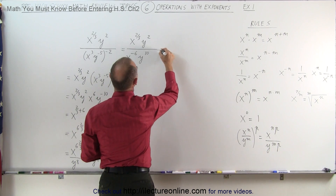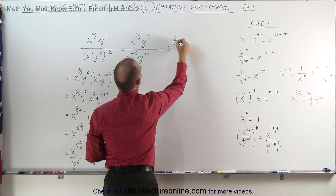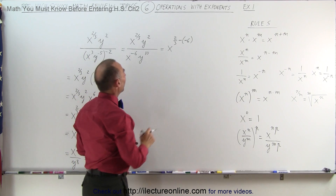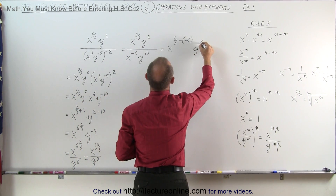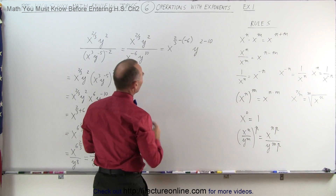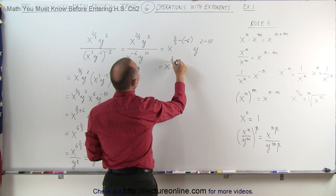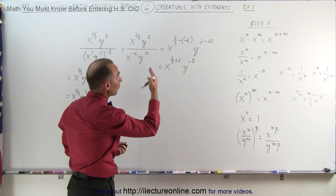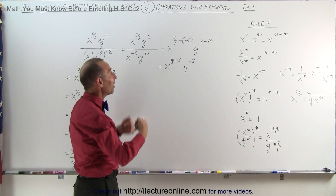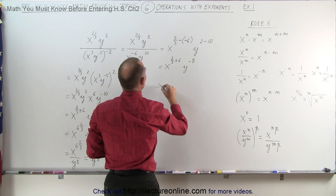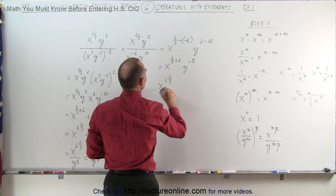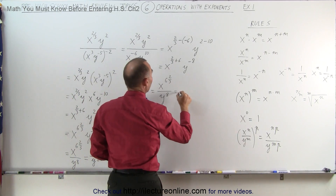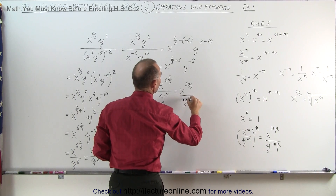So this can be simplified as follows: x to the two-thirds minus a negative 6 — I'm subtracting the exponent from below — and y raised to the 2 minus 10 power. Simplifying, this is equal to x to the two-thirds plus 6 power, and y to the minus 8 power. I can move y to the minus 8 to the denominator to turn that into a positive exponent. Combining these, this becomes x to the 6 and two-thirds power divided by y to the 8 power, which again could be written as x to the 20 over 3 power divided by y to the 8 power.